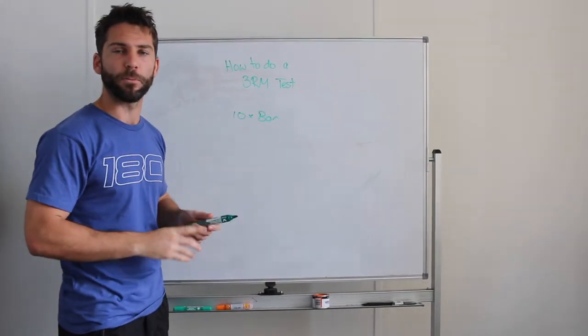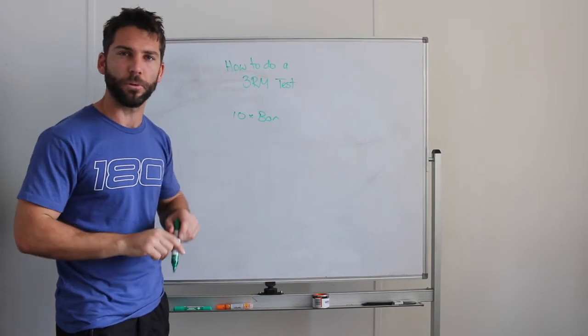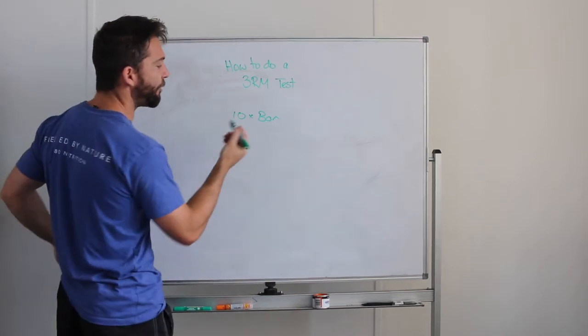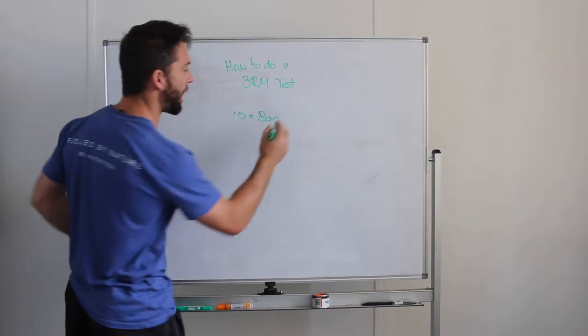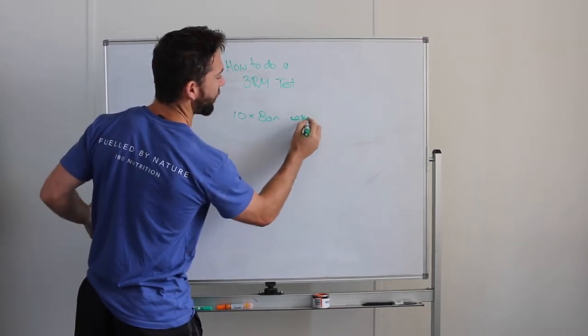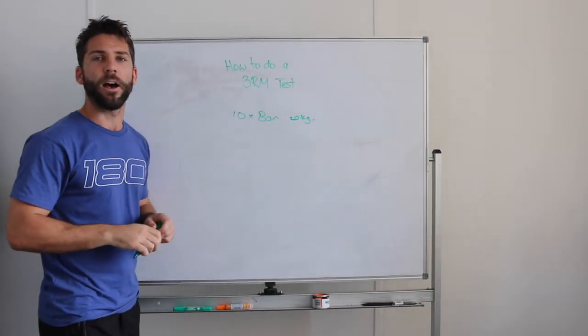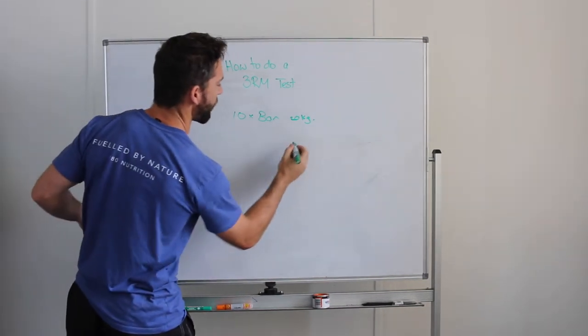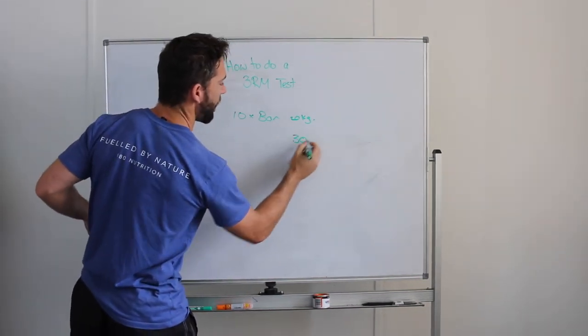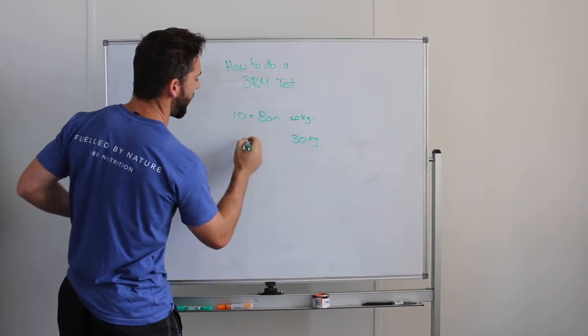Let's say you add five kilos each side. A bar is 20 kilos for those that don't know that. Let's say you add five kilos each side, so that makes it 30 kilograms, and you might do eight times that.